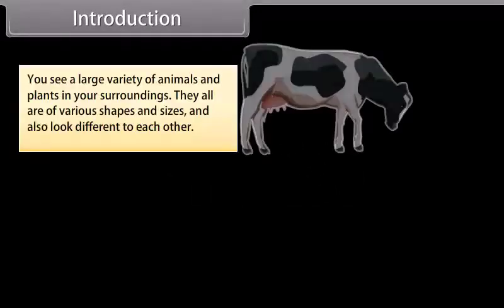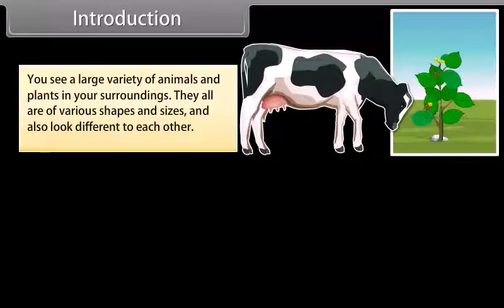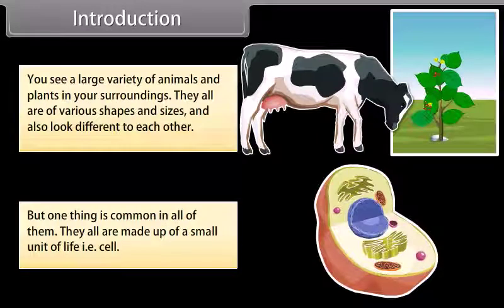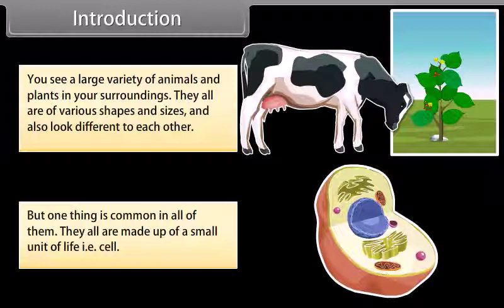Introduction. You see a large variety of animals and plants in your surroundings. They all are of various shapes and sizes and also look different to each other. But one thing is common in all of them — they all are made up of a small unit of life, that is, the cell. So in this module we are going to learn about cell and its structure.